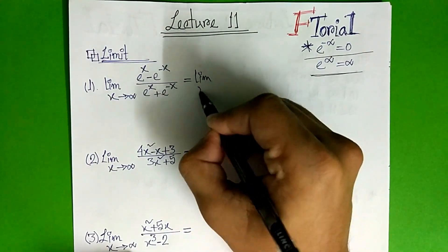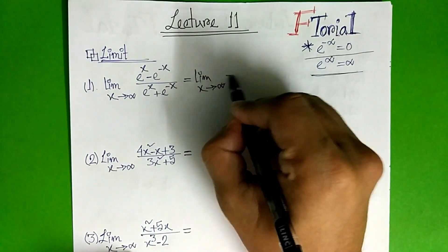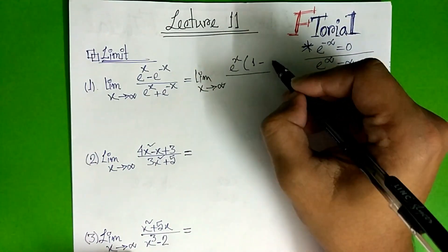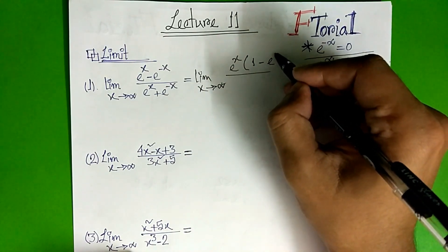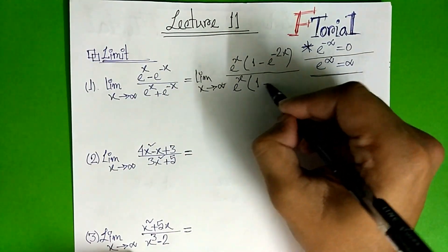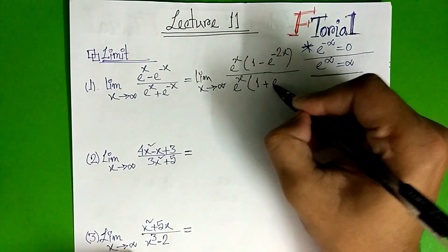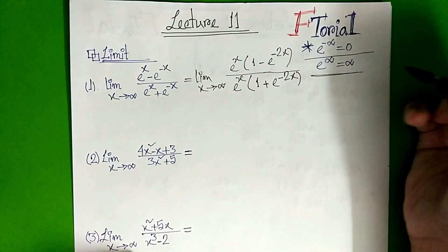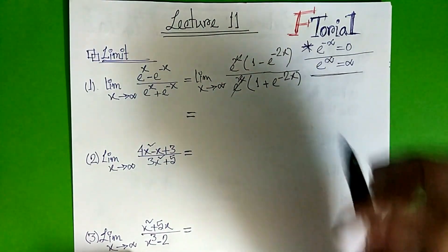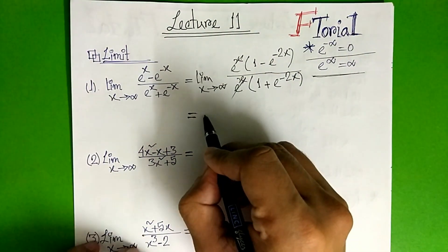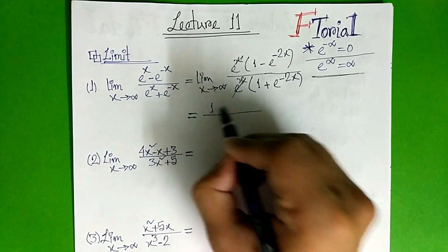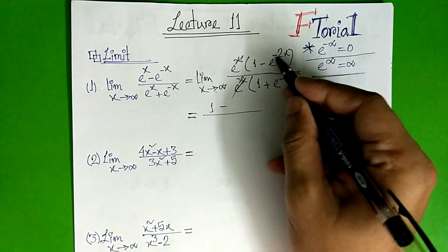So this is the limit. The second term is e to the power x is common. 1 minus e to the power x is equal to x. So e to the power x is equal to x. So minus infinity.